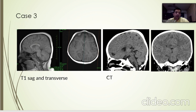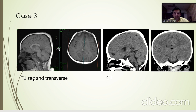Coming to Case 3, on T1 sagittal and transverse sections we can see a curvilinear lipoma in the posterior portion of the corpus callosum. We can also see another soft tissue density extending from a small bony defect which could be a meningoencephalocele. On CT, the region corresponds to a low CT attenuation value of fat.